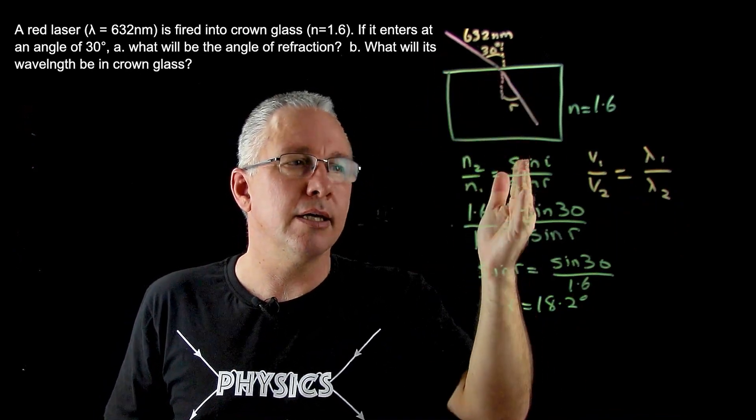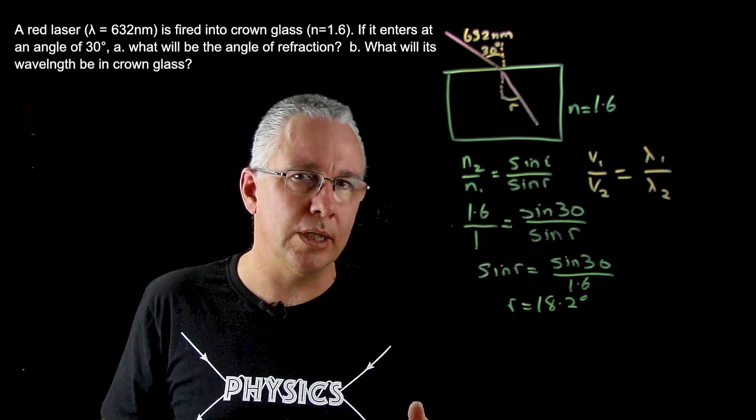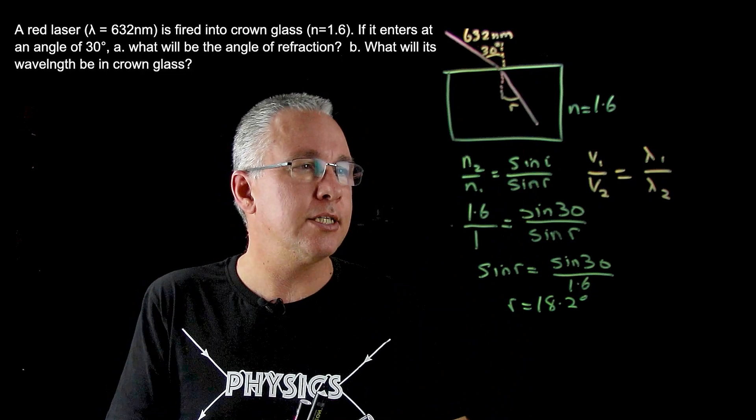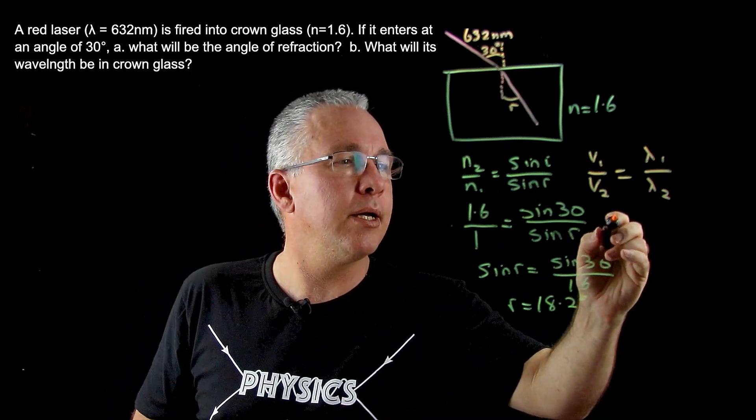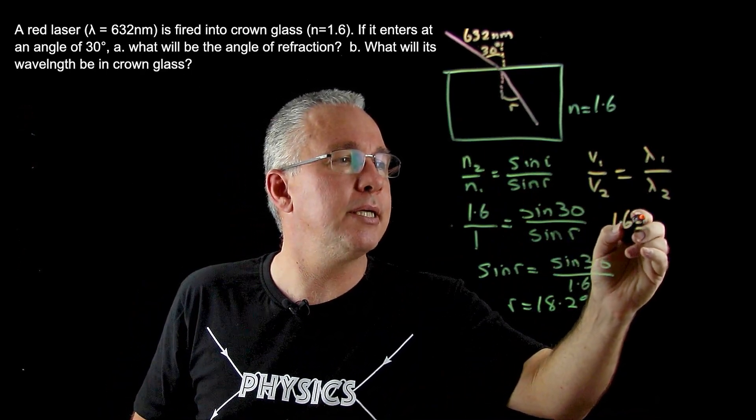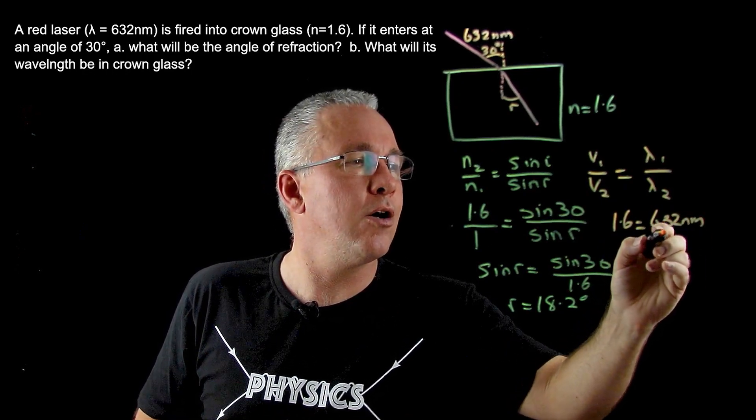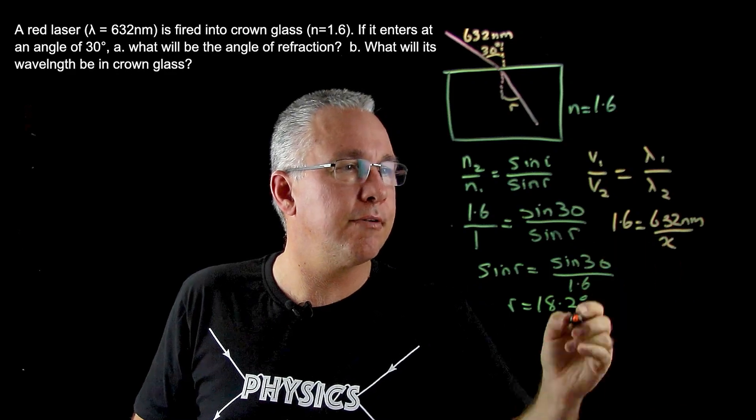In other words, the wavelength, if you look at the values here, the wavelength gets smaller, the velocity decreases. And so as a result, we know that 1.6 is going to be equal to 632 nanometers over our unknown value.